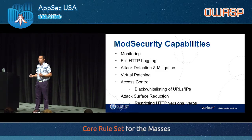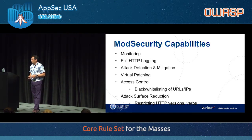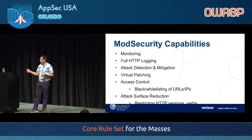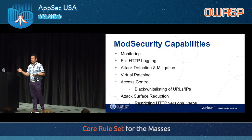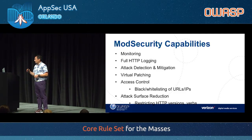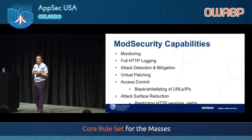Of course, attack detection and mitigation — that's the standard WAF use case. Virtual patching, as we discussed. You can also use mod security for access control: blocking certain URLs or extensions from being accessed. You may have unintentional exposure of URLs or data that shouldn't be there. Also, attack surface reduction through restricting HTTP verbs you want to support, and setting limits on maximum file upload sizes, maximum number of arguments, and maximum argument sizes.